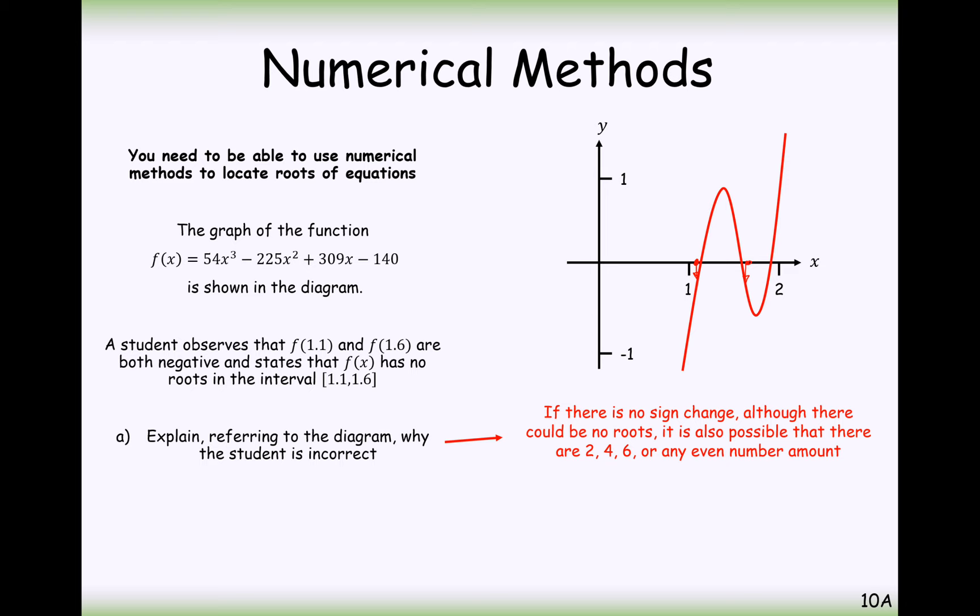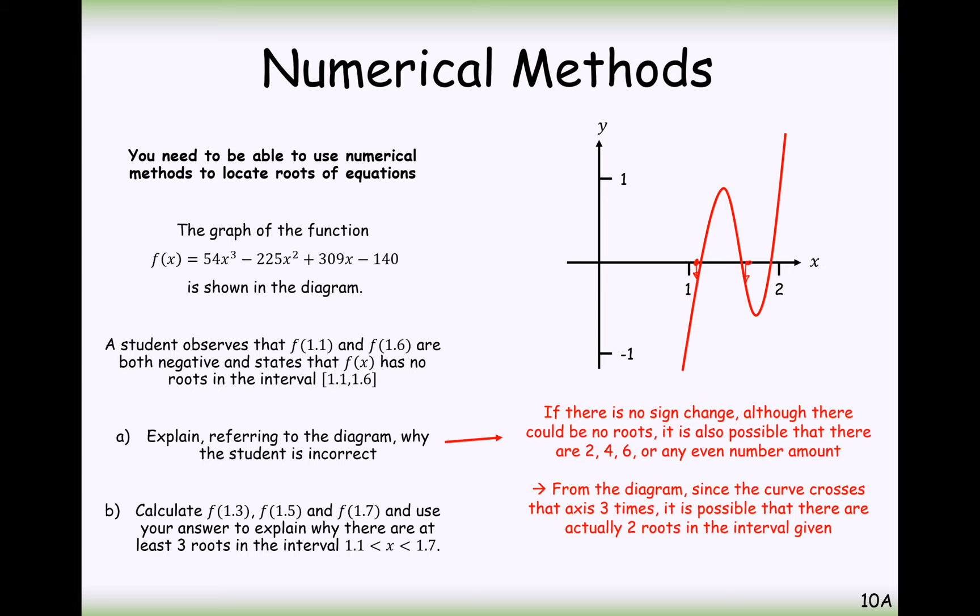Although there could be no roots, it's possible that there are either 2, 4, 6, or an even number of roots. From the diagram, since the graph crosses the axis three times, it is possible that there are actually two roots in the given interval. Just explaining that it could have gone through the zero axis, through the zero coordinate, and back through the zero coordinate. So it's difficult to say whether it has a root there or not.